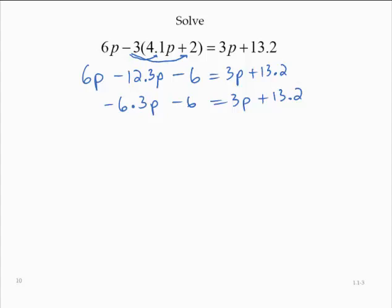Bringing variable terms to the left, I'll subtract 3p. And nonvariable terms to the right, I will add 6 to both sides.